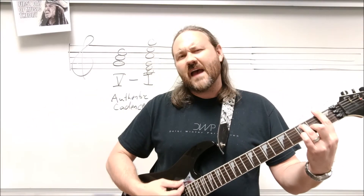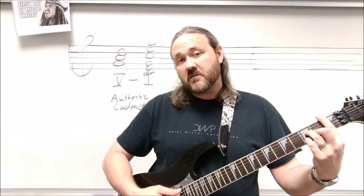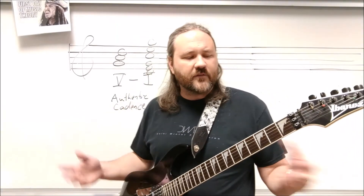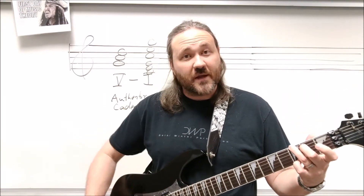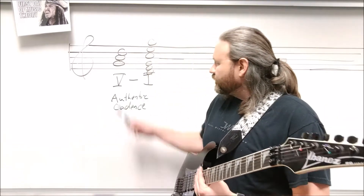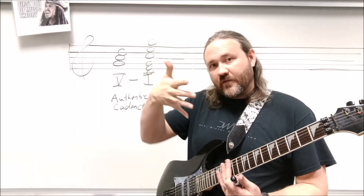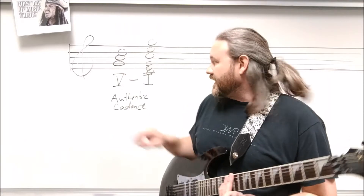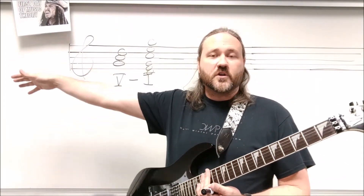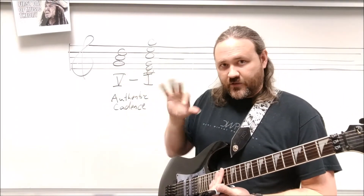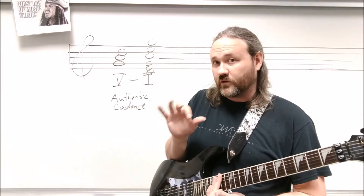You can do a five-one in any key and it's going to have the same effect — F7 to B-flat major for a jazz sound, or D major or D7 to G major. The reason we have such a strong resolution with the authentic cadence is because the fifth of the one chord is the root of the five chord. That's a really strong relationship from our just intonated intervals — a three-to-two ratio, an extremely close relationship.